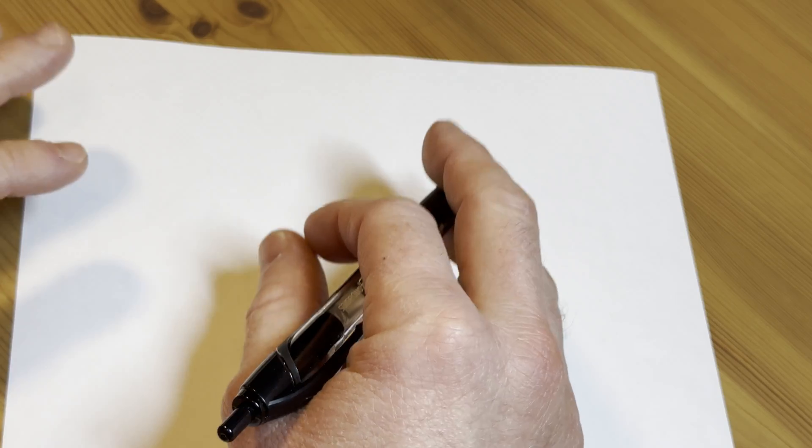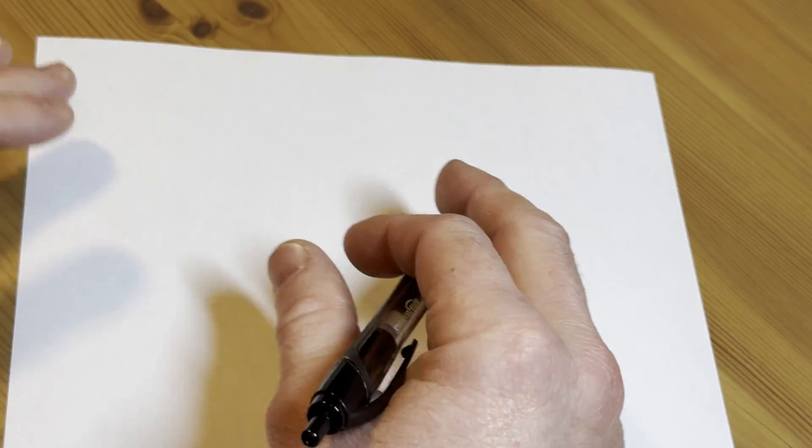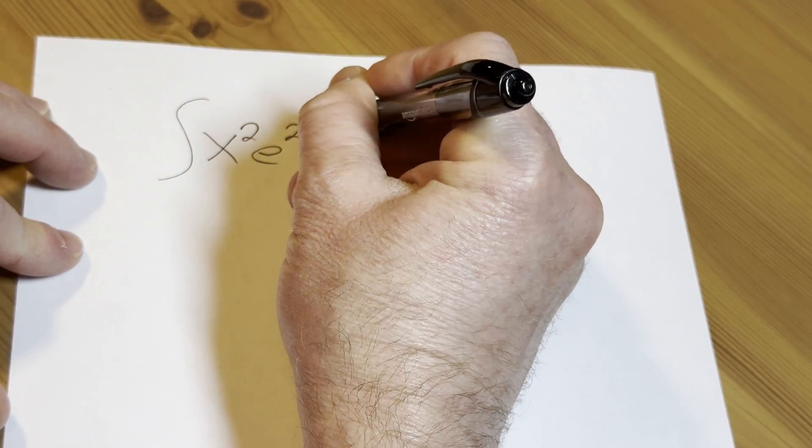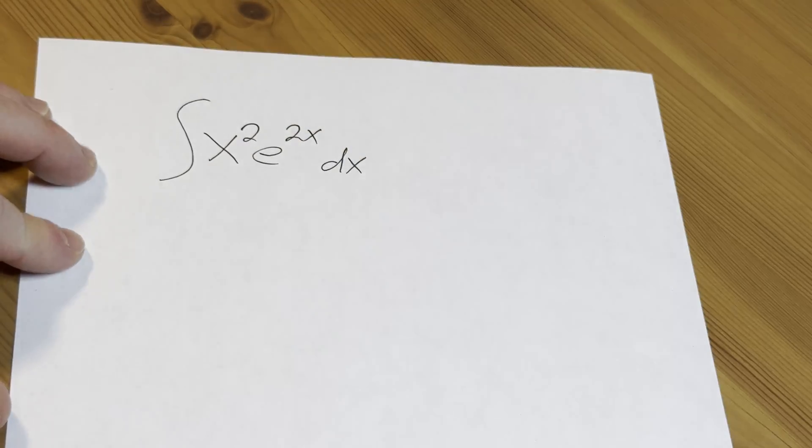Hi everyone, in this video we're going to do a basic math problem. I'm going to show you how to use something called tabular integration. So let's just do it. Let's say we have an indefinite integral: x squared times e to the 2x dx.